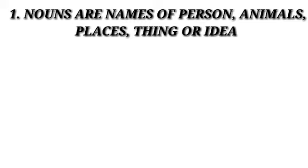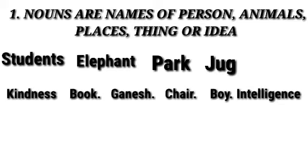Number one: nouns are names of a person, animal, place, thing, or idea. For example: student, elephant, park, jug, kindness, book, Ganesh, chair, boy, and intelligence.